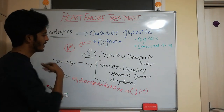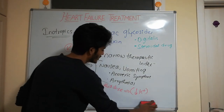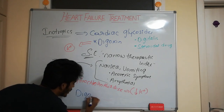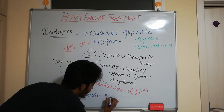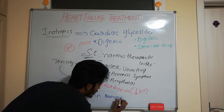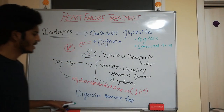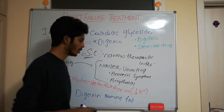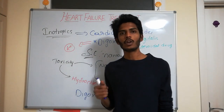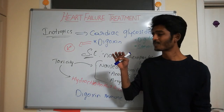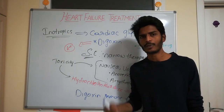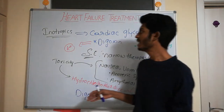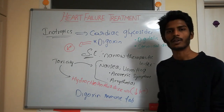If a patient becomes overdosed on digoxin, the treatment is digoxin immune Fab antibodies. This covers the main pharmacology of heart failure treatment. Additionally, diuretics can be used to decrease blood volume and reduce edema symptoms, and other vasodilators such as hydralazine can also be used. These are the most important drugs in the treatment of heart failure.